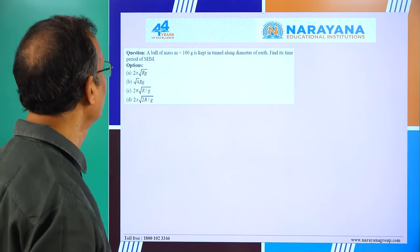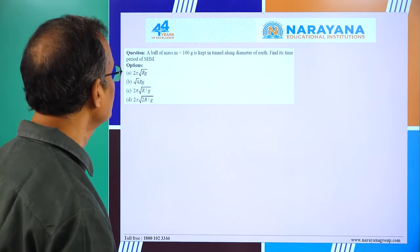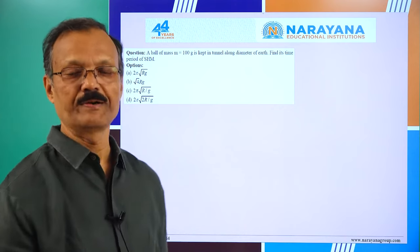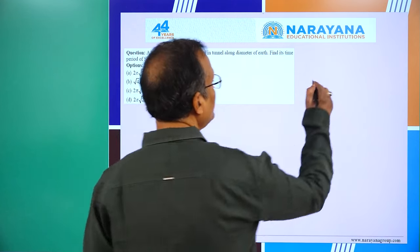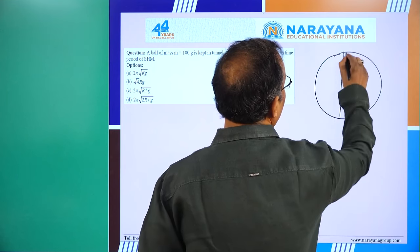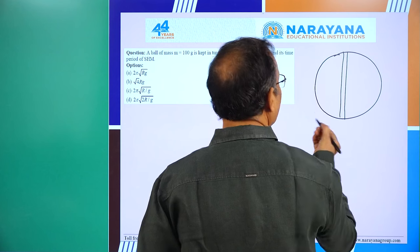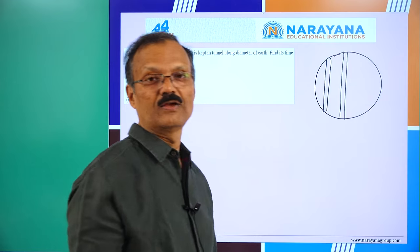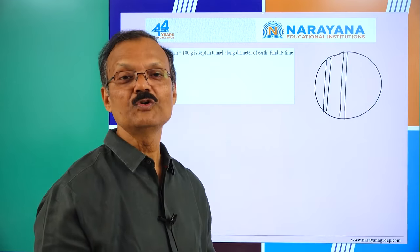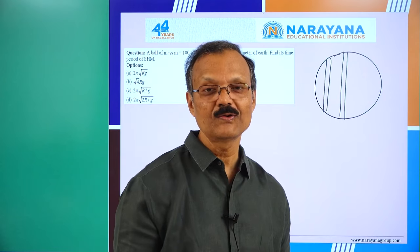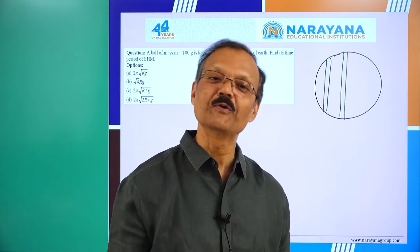A ball of 100 grams is kept in a tunnel along the diameter of the Earth; find the time period. For any tunnel you dig through the Earth, whether through the center or not, the time period is always 2π√(R/G).